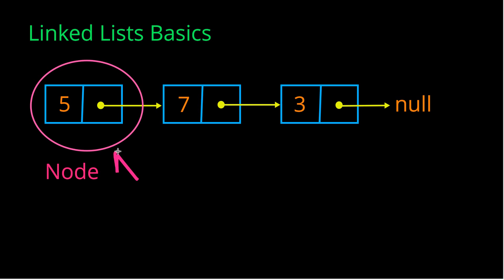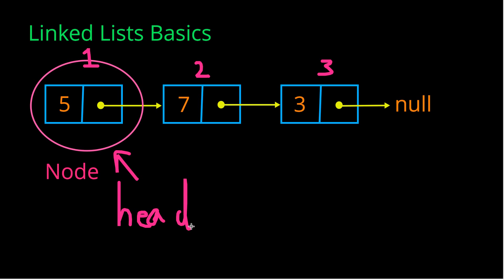As we can see here, this specific linked list has three different nodes — the first one being right here, this is the second one, and this is the third one. The first node is often called the head node, and it's very important to understand that a whole linked list can be gotten and all the values traversed as long as you have the head node.